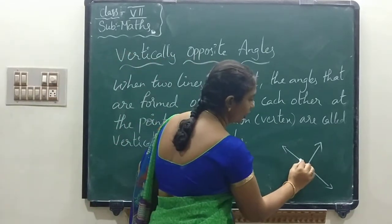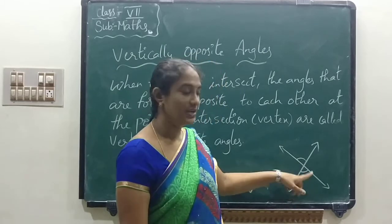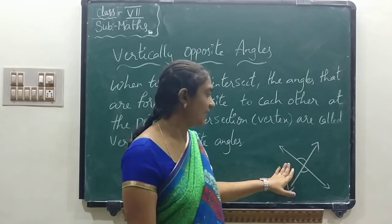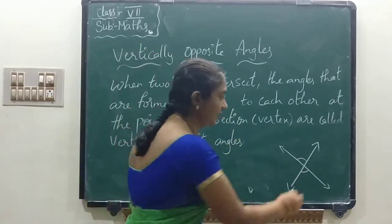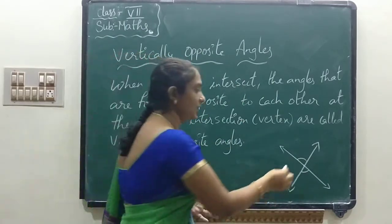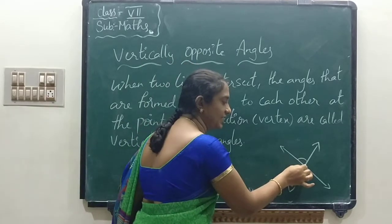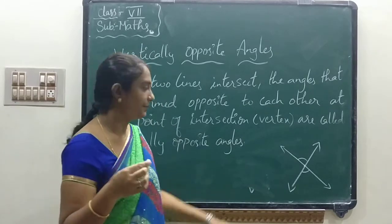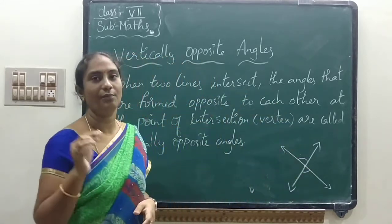Here we got one angle and here we got one angle. For this angle, this is the opposite side; for this angle, this is the opposite side. So when two lines intersect at a point of intersection — that center point we are calling as vertex — those two angles formed opposite to each other at that vertex are called vertically opposite angles.